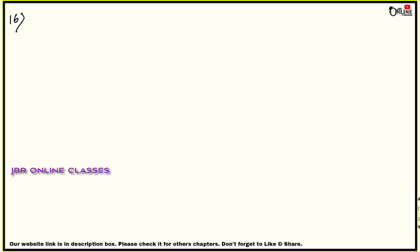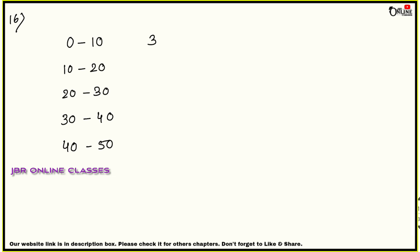Sum number 16: The table uses 'up to' notation. 'Up to 10' means 0–10. 'Up to 20' means 0–20. So the class intervals are 0–10, 10–20, 20–30, 30–40, 40–50. The number of students given is cumulative: up to 10 → 3 students, up to 20 → 11 students, up to 30 → 28, up to 40 → 48, up to 50 → 70.